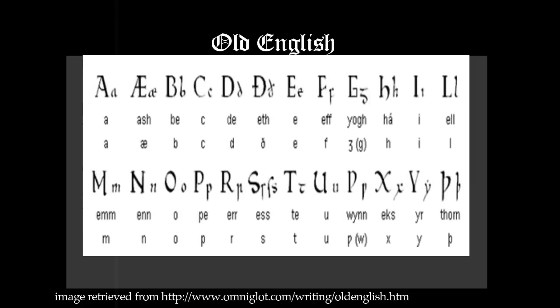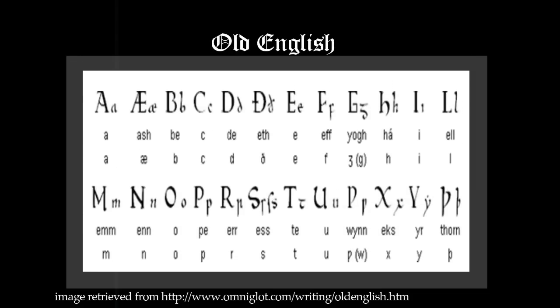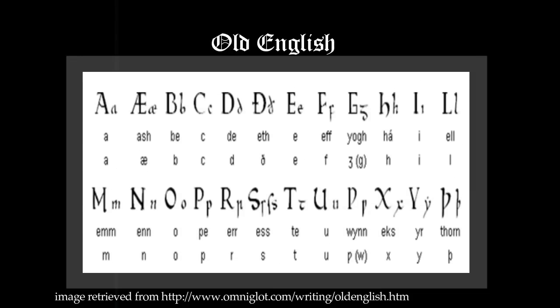So let's look a little more closely at Old English. Did you know that the Old English alphabet didn't have the letters J, K, V, or W? Have a look at this example of Old English. Do you see a J, K, V, or W?